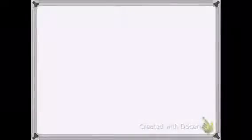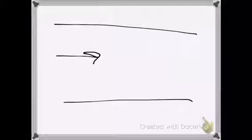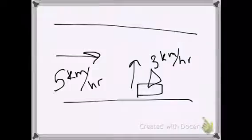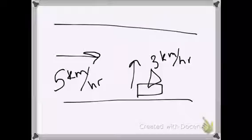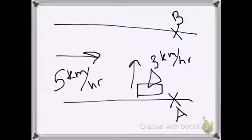The first example is a river crossing problem. The river is flowing to the right at five kilometers per hour, and we have a boat trying to cross it traveling at three kilometers per hour. The question is: will the boat get straight across from point A to point B? The river current will carry the boat downstream as it tries to cross. We have a simulation showing this scenario.